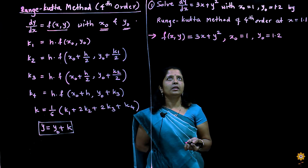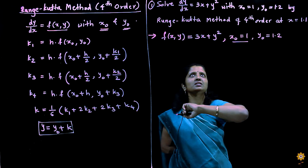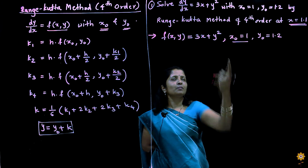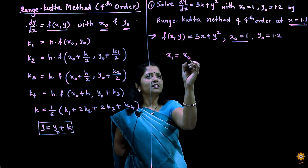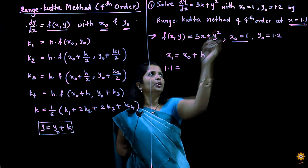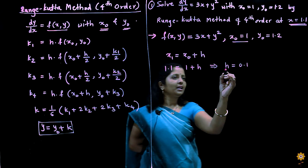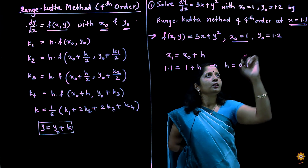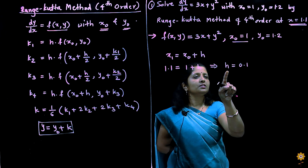Now we will discuss the number of steps required in this example. The initial value of x is 1 and we want to solve the differential equation at x equal to 1.1. In this Runge-Kutta method, the step size is not given, so we will determine it. We know that x1 equals x0 plus h. Taking x equal to 1.1 as x1, we get 1.1 equal to 1 plus h, which gives h equal to 0.1. With h equal to 0.1, the number of steps required is 1, since we go from x equal to 1 to x equal to 1.1.